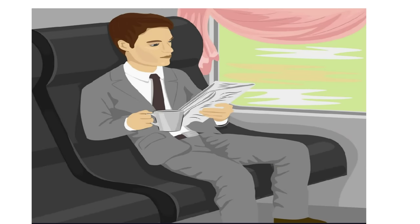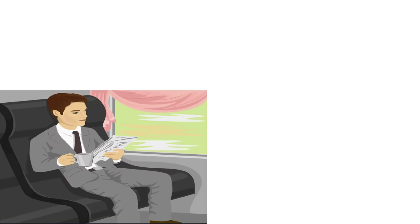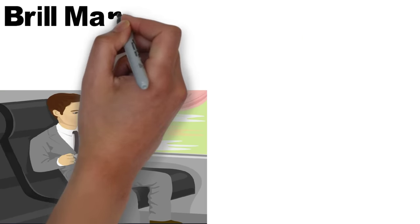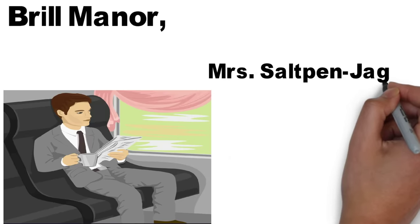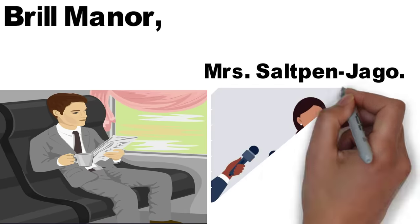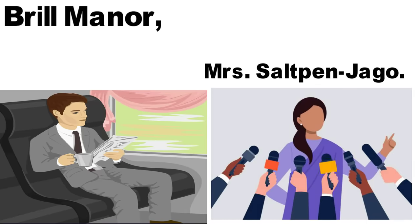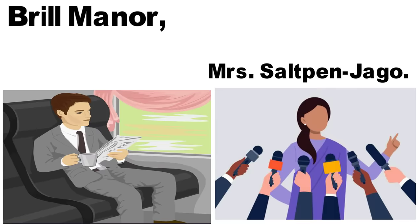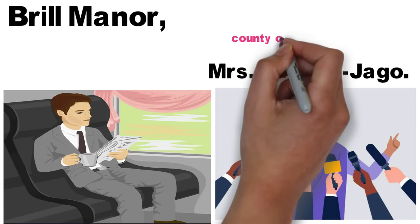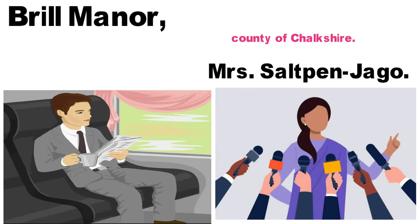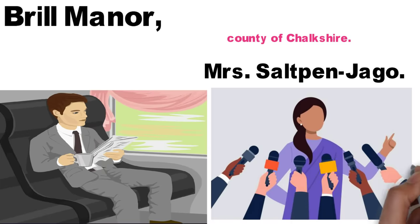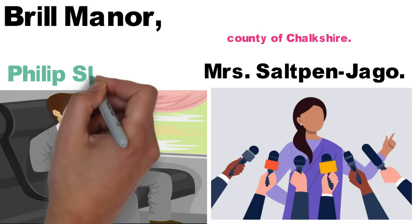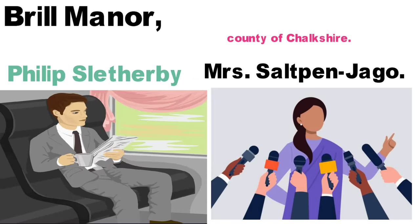The next character is coming. There is a Brill Manor in a country where he is going to visit Mrs. Salpanjago. Honoria Salpanjago is a socially important person in London. She is one of the most influential persons in the country of Chalkshire. If we look at Philip, he is a politician.